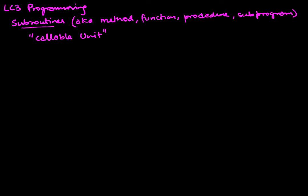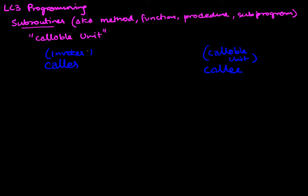The important thing about a subroutine is that when we invoke it, we use the terms callee — which is the callable unit — and caller, which is the one that invokes it. The caller invokes the callable unit by an instruction called Jump to Subroutine, JSR, which gives the name of the callable unit.